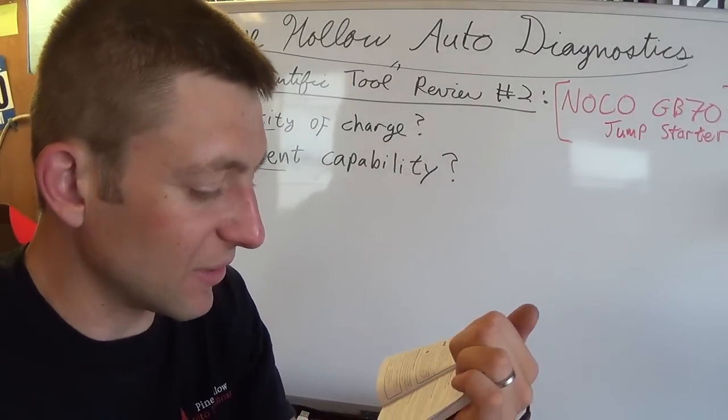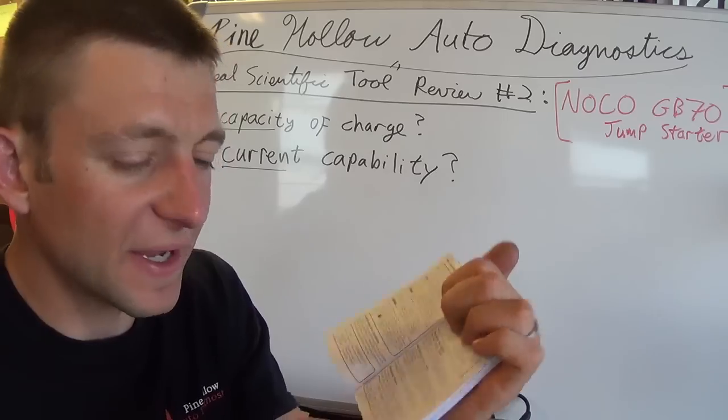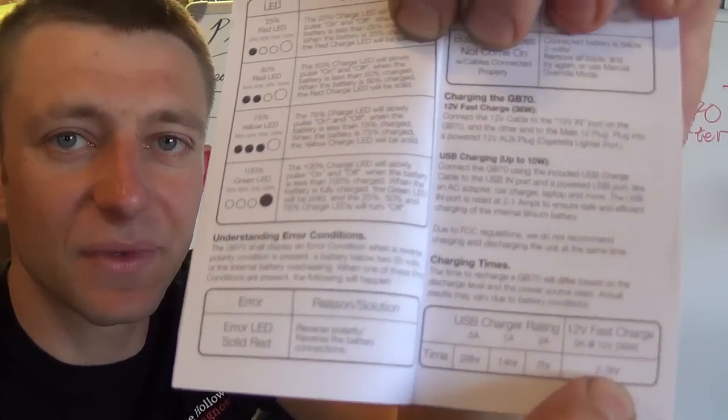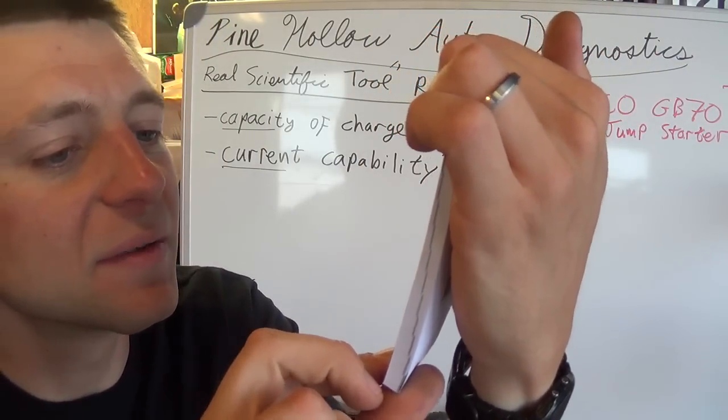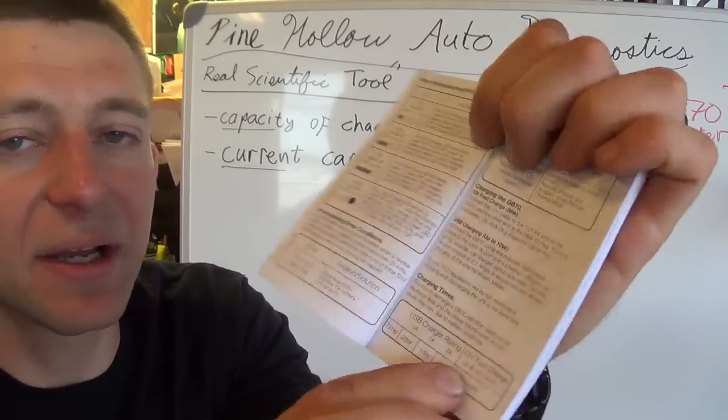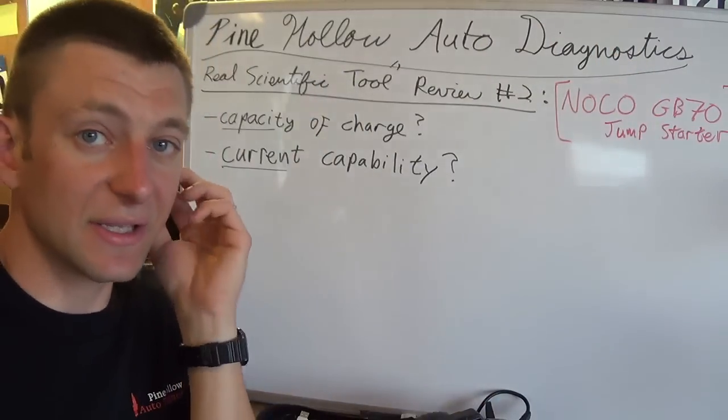So the fast way to do it is the 12 volt, two to three hours at three amps. That's more reasonable.